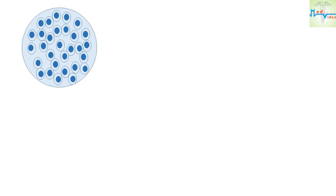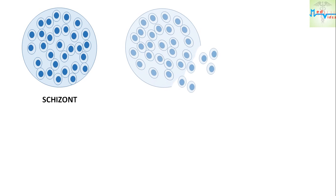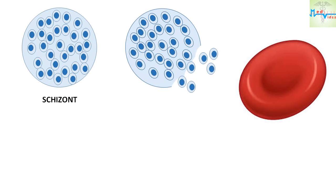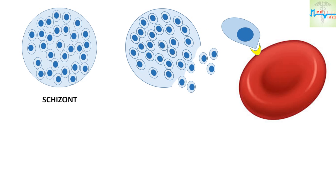The resultant structure is called the schizont. Each individual cell inside the schizont is a merozoite. The schizont then breaks and releases the merozoites into the bloodstream, where they come in contact with circulating RBCs. These RBCs have special glycophorin receptors.